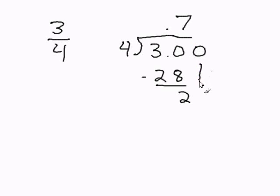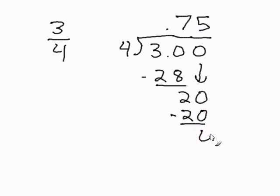Now we must add another zero and bring that down. 4 goes into 20, 5 times. 5 times 4 is 20. Subtract, and we get a zero.